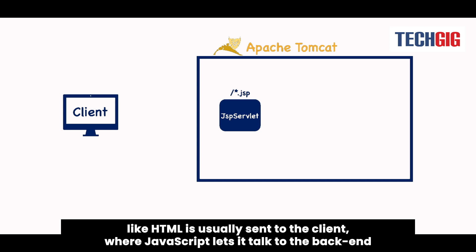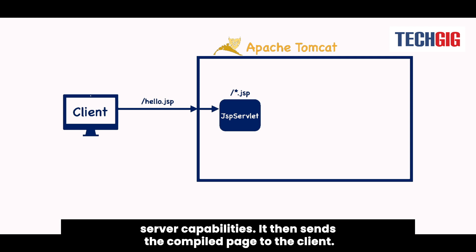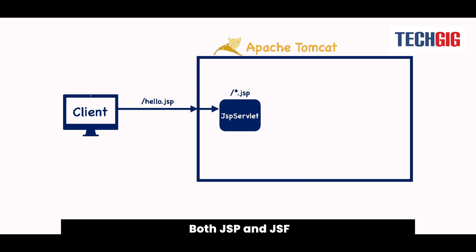Markup like HTML is usually sent to the client, whereas JavaScript lets it talk to the backend server. JSP pre-processes the HTML with special commands to access and use server capabilities. It then sends the compiled page to the client.